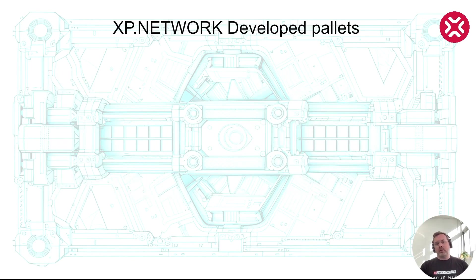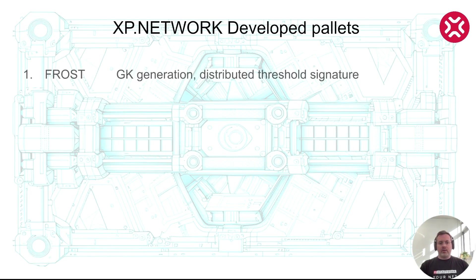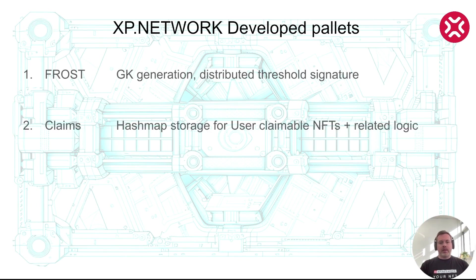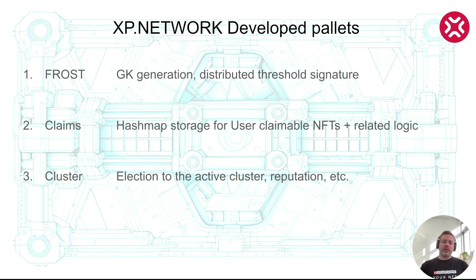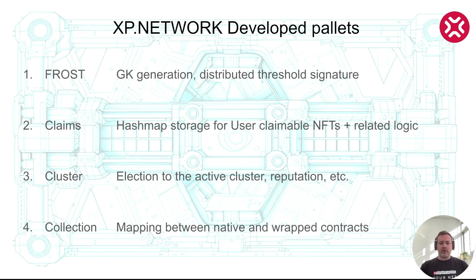There are also a number of pallets that we developed ourselves. The first is Frost, responsible for group key generation and distributed threshold signatures. The NFT pallet is like a hash map which stores the NFTs users can claim and some related logic for interacting with it. The Cluster pallet allows validators to be elected into the active cluster, estimates their reputation, and handles other logic related to the election of validators and voting from potential validators. Collection is a pallet responsible for mapping native and wrapped contracts — native contracts are where NFTs were originally minted, and wrapped contracts hold NFTs from other chains. These four are already developed and the list may grow.